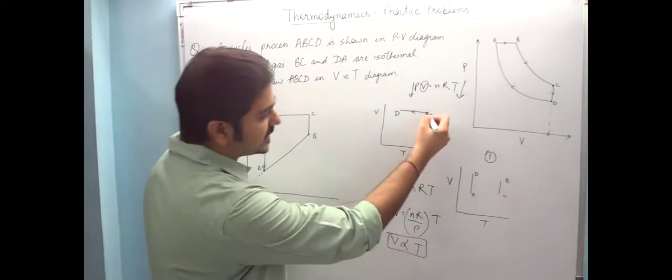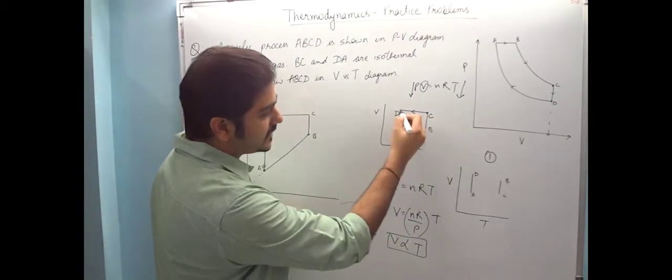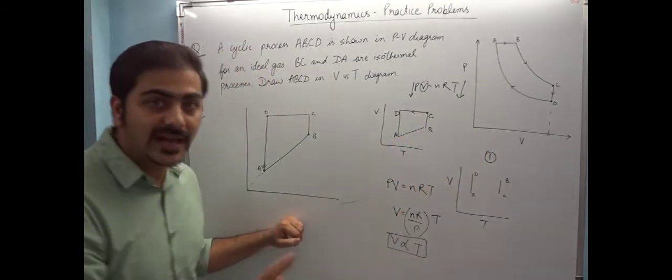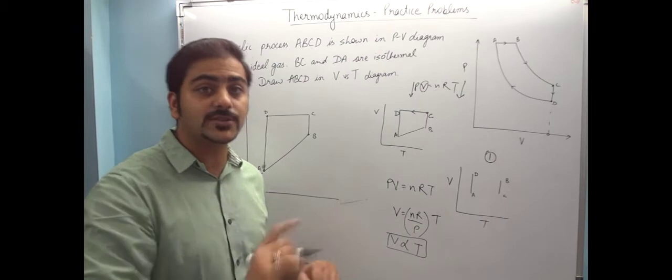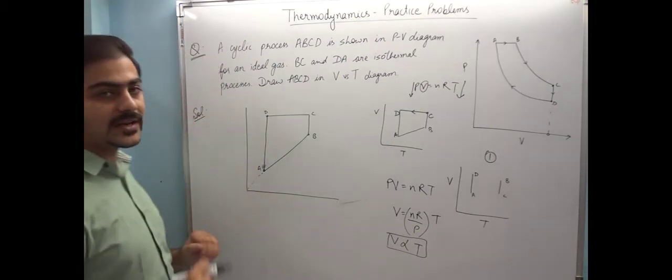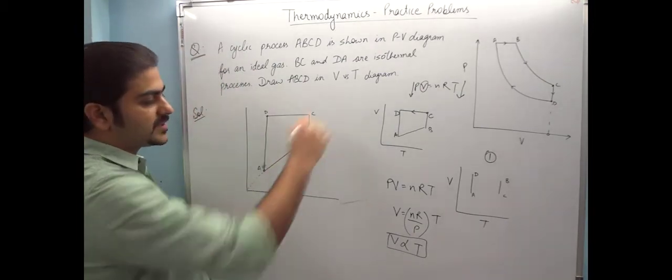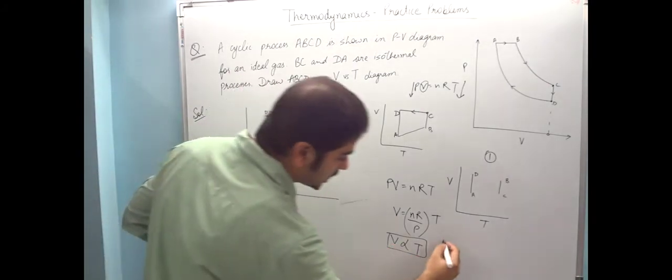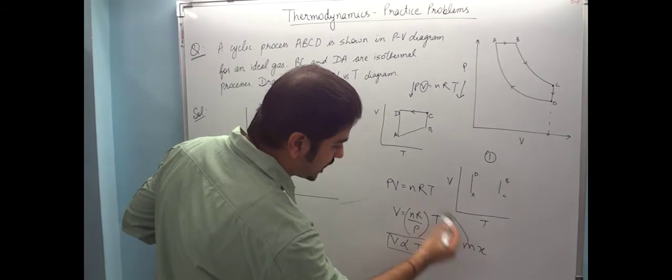Okay, and below C came B, below D came A. But we just saw that the path from A to B is a straight line which is passing through origin. If it was a normal straight line, I could have joined A to B from here also. But it is a straight line in which V is proportional to T, y equals mx type, whose slope is nR by P.